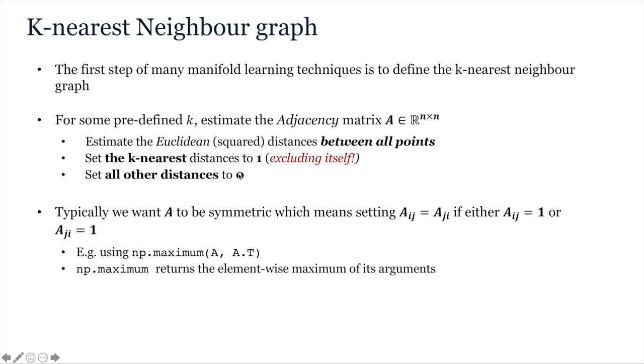Typically, you want A to be symmetric, so that means that if the index at ij is 1, then you want the index at ji to be 1. This can be achieved using the numpy maximum function and passing it A and A transpose, which, as you will see on Tuesday's tutorial, sets the index of A to its maximum in either of A and its transpose.